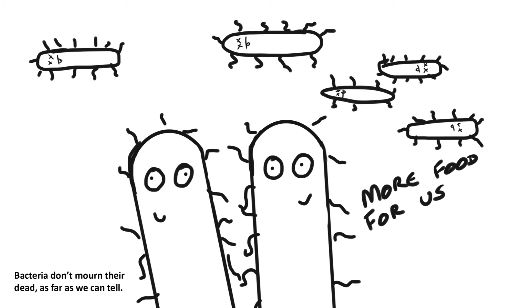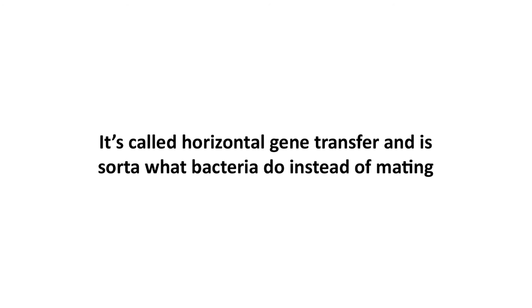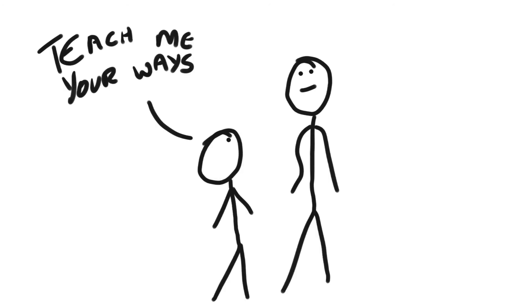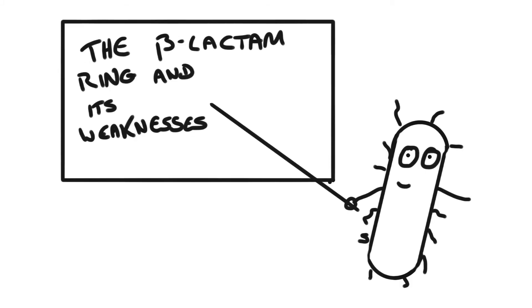This is helped by the fact that bacteria can swap DNA between individuals. We can't do this, we pass genes on to our children, but I can't go to a taller friend and ask him to teach me how to be tall. Bacteria can pass resistance genes around, almost like learning from one another. But not really, because bacteria can't think.